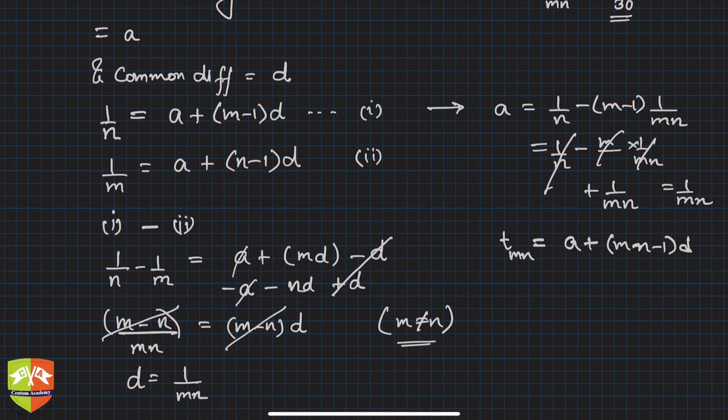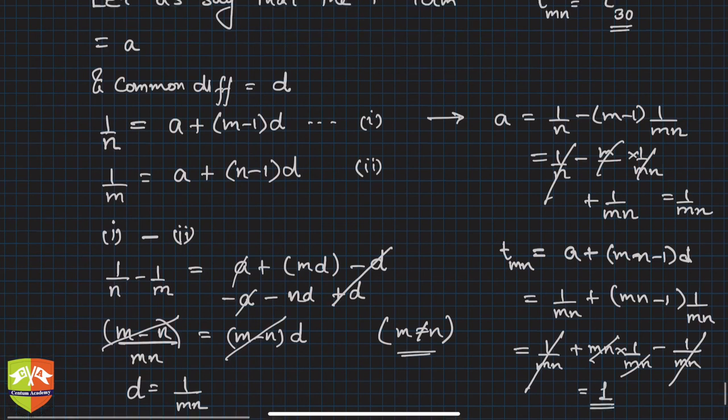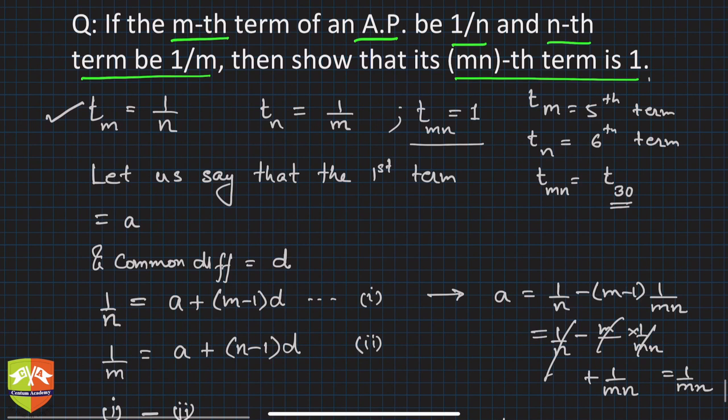So a is 1/(mn), and then this is (mn-1) times 1/(mn). So hence, if you see, this is nothing but 1/(mn) plus mn times 1/(mn). Let's open the bracket: this is 1/(mn), right? So mn times 1/(mn) is 1, and this thing and this thing will go. So hence, this is simply 1, and this is what we needed to prove. See, they were asking you to prove that mn-th term is 1, and we have proved it here.